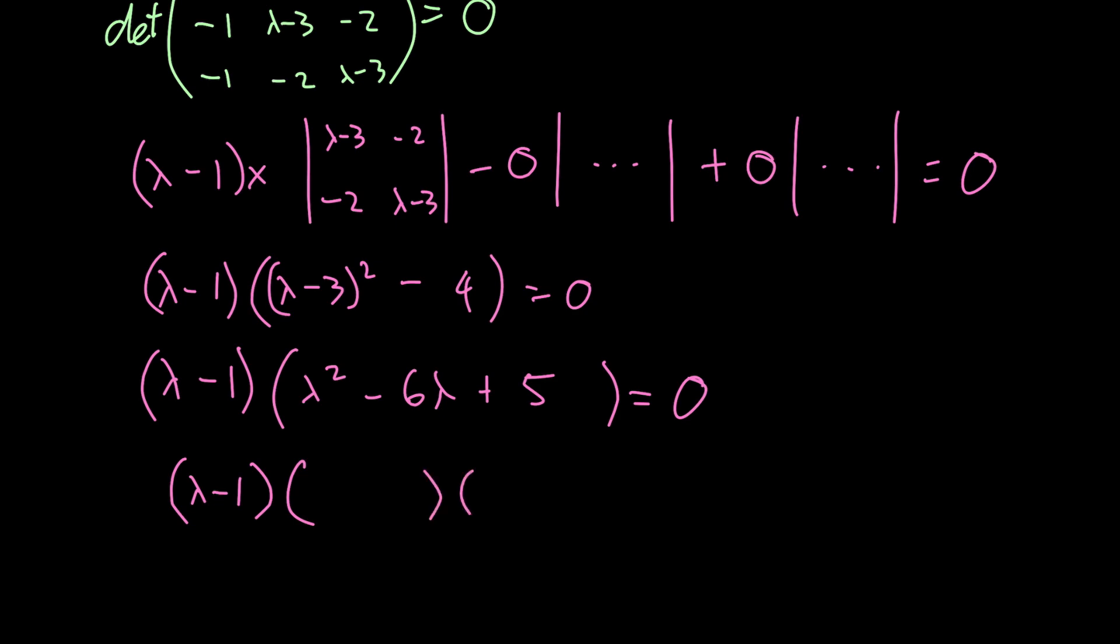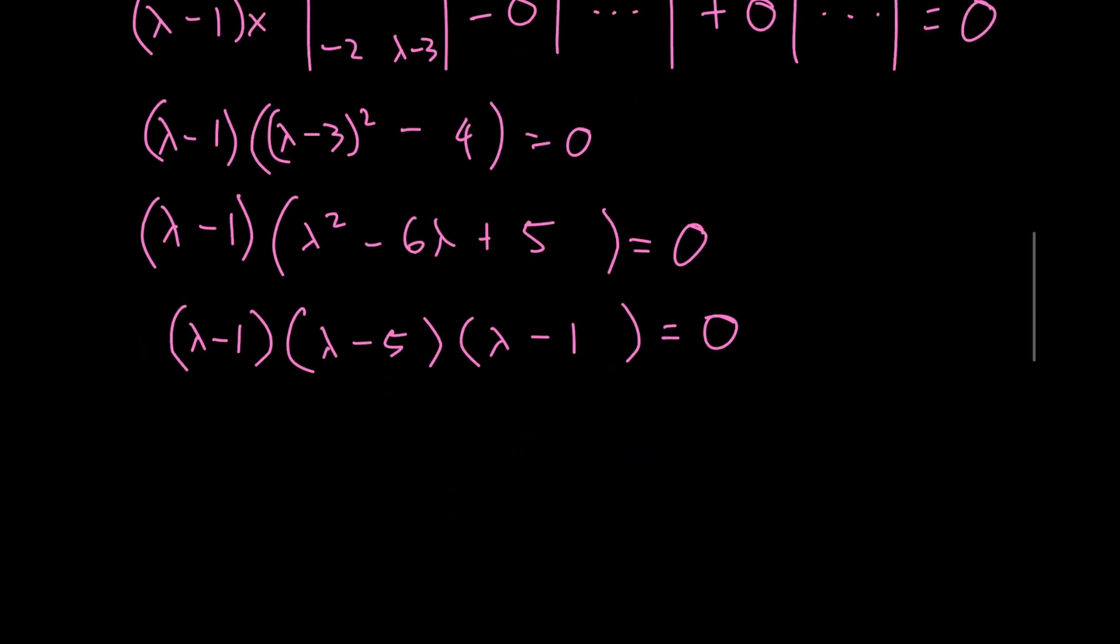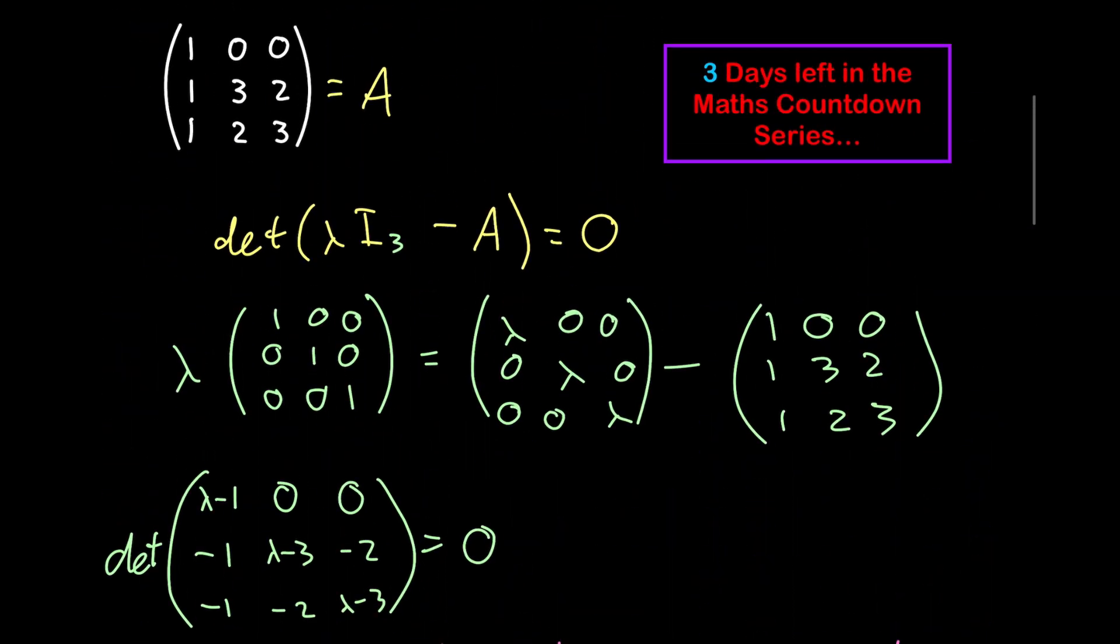We have lambda minus 1 into lambda minus 5 lambda minus 1. You can check that those do give you that trinomial. We must therefore have that lambda is equal to 1 or lambda is equal to 5. We have solved for all the eigenvalues of this matrix A.